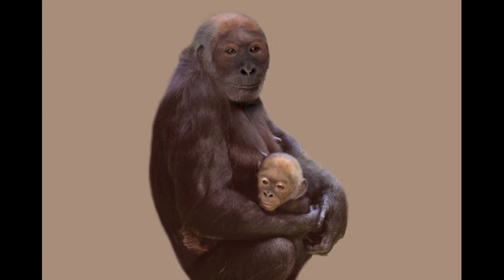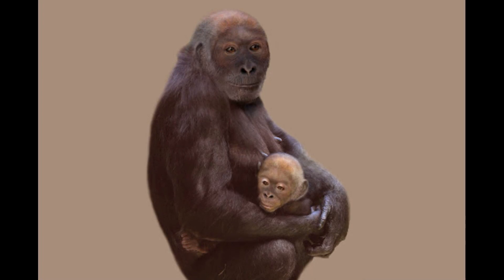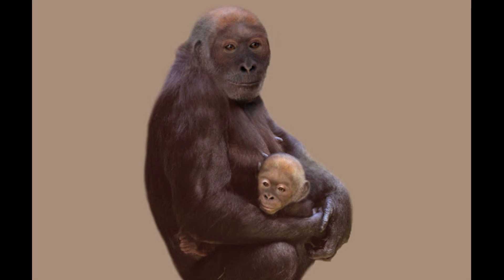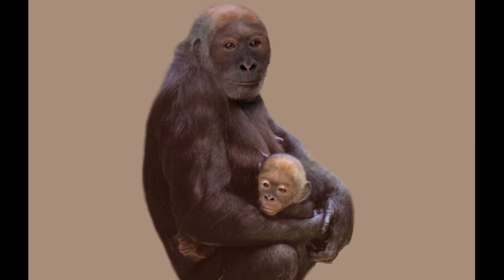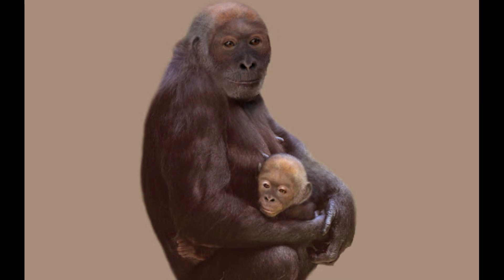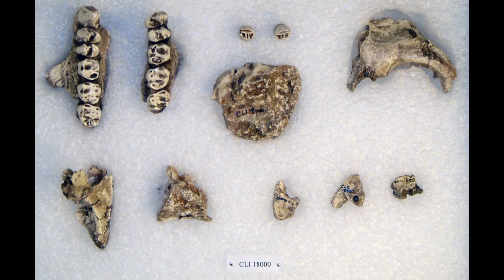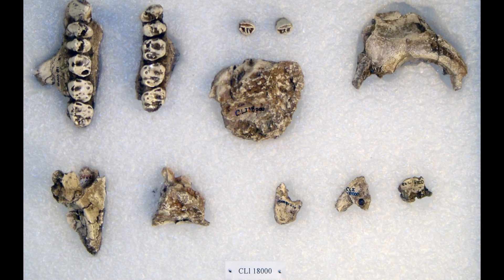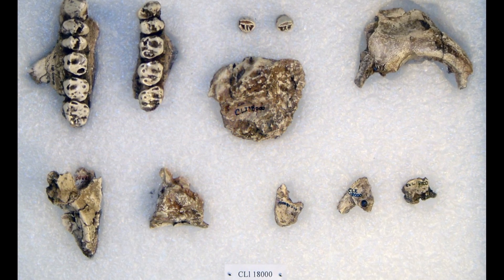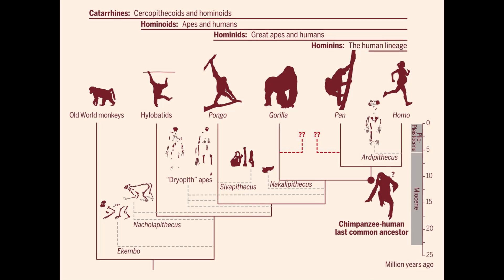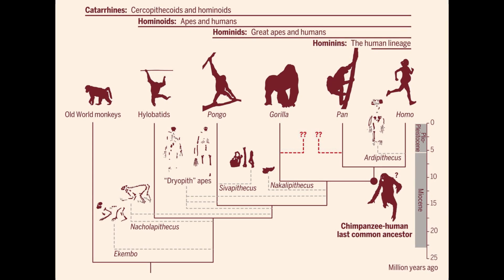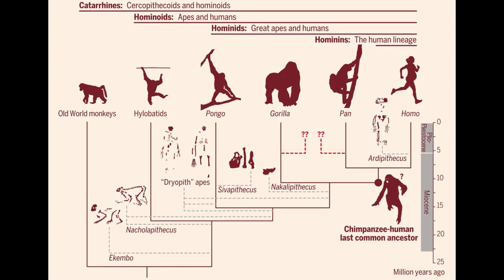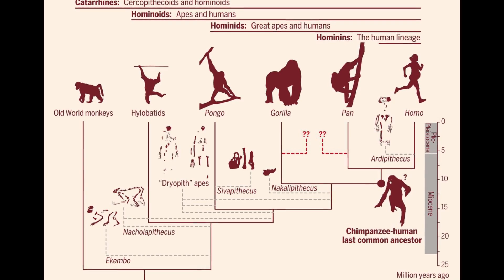Beginning approximately 13 million years ago, hominoids also make their first appearance in the European fossil record, with the subtropical forests there clearly being to their liking. Unfortunately, many of these animals are known from very fragmentary remains and as such have proven difficult to classify. Indeed, even today many of these species tend to move around the ape phylogenetic tree quite significantly depending on the study.